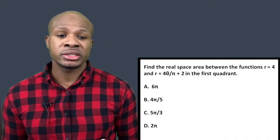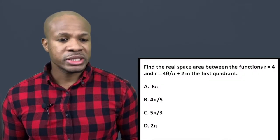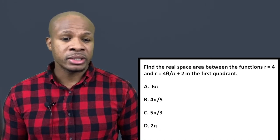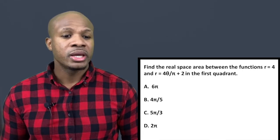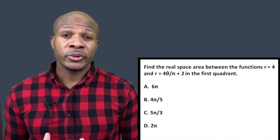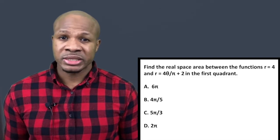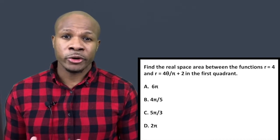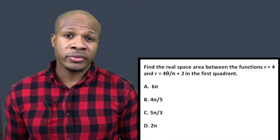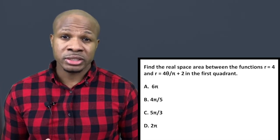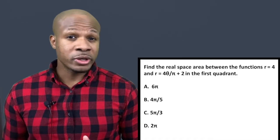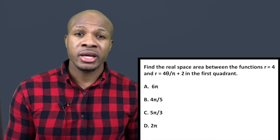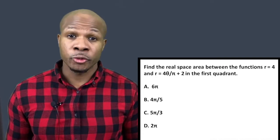Now let's apply this to a question: find the real-space area between the functions r = 4 and r = 4θ/π + 2 in the first quadrant. This is a classic example of why we need to understand area in different coordinate systems — converting these functions into real-space coordinates would be much harder to deal with.